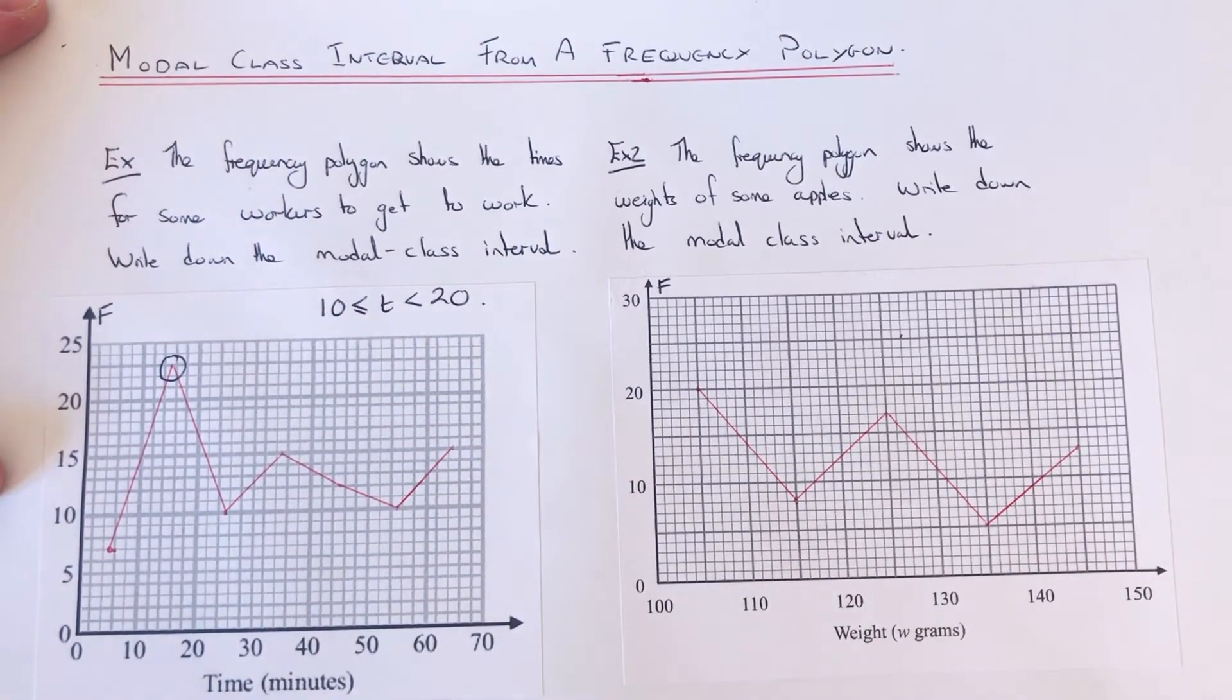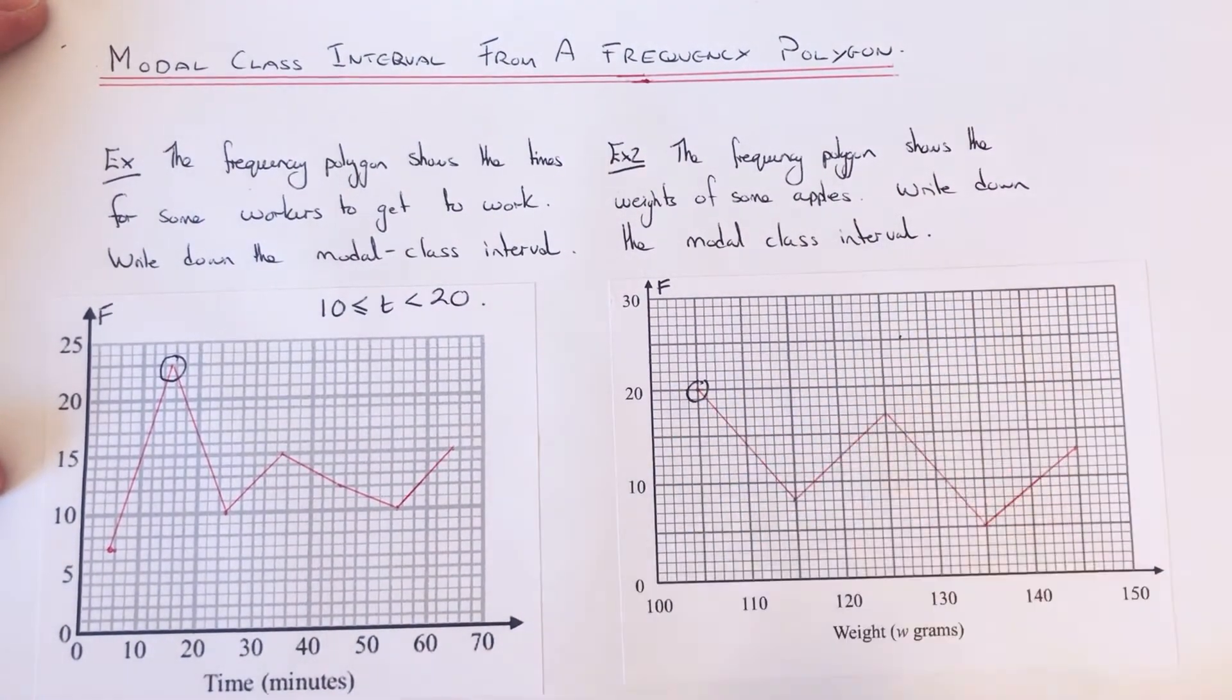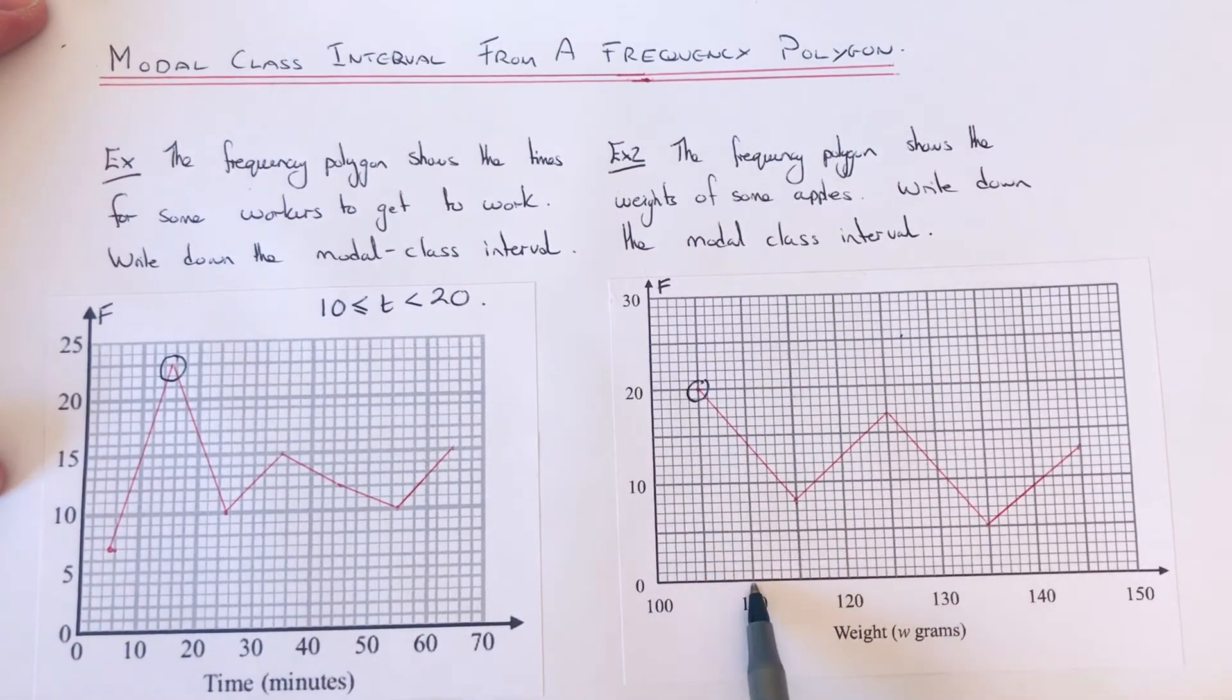This is the highest point on the frequency polygon. Our highest point is here with a frequency of 20, so it's in the first group, 100 to 110.